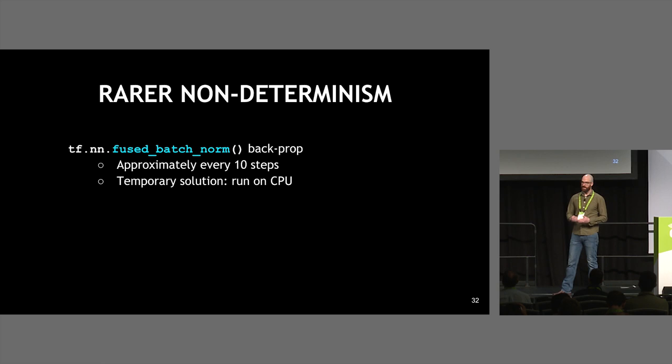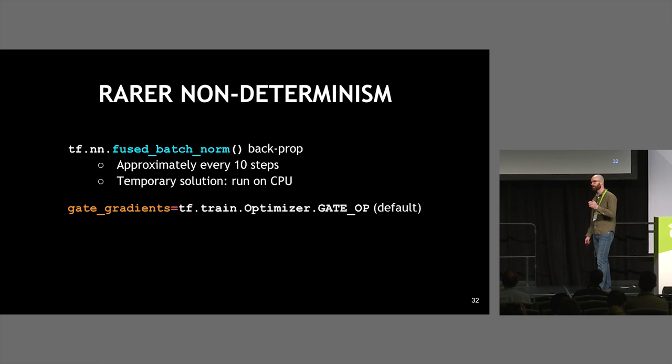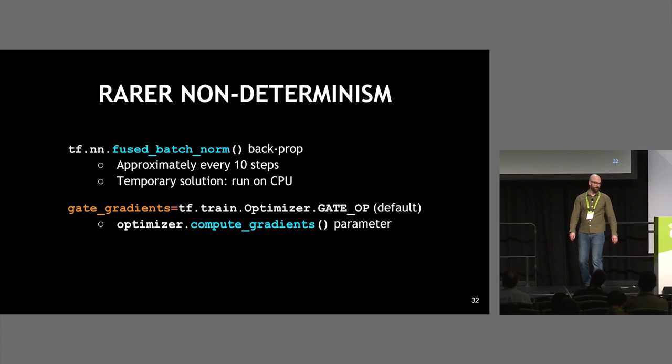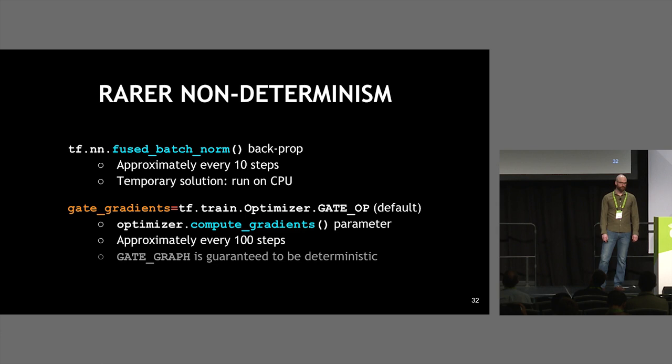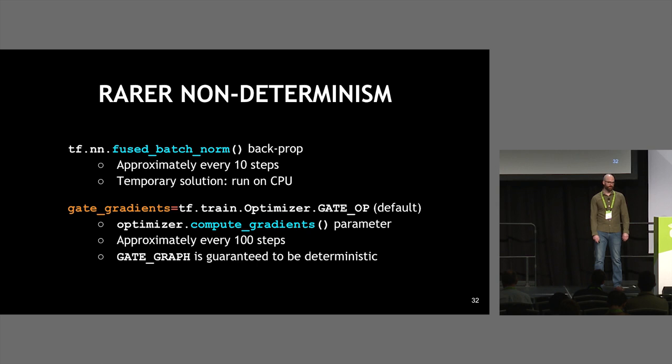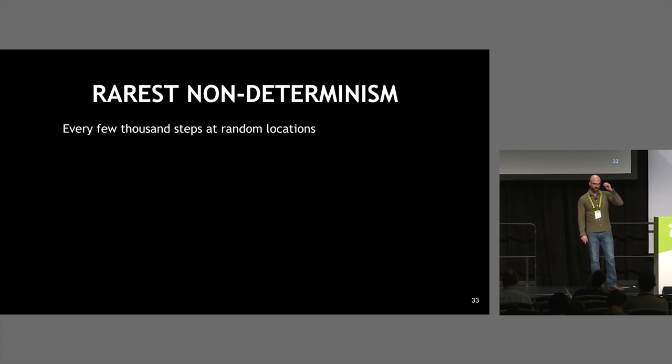The temporary solution for fused batch norm was to run it on the CPU, though that significantly impacted performance due to passing data back and forth between CPU and GPU memory. That revealed the next source: gate gradients, passed into compute gradients, happening every 100 or so steps. Gate gradients is guaranteed to be deterministic because it's totally not parallel — TensorFlow has different ways of calculating gradients with varying levels of parallelism.